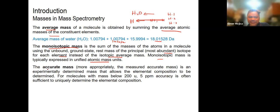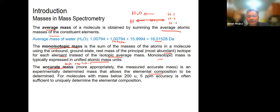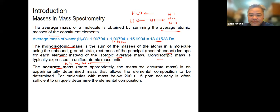There's also what we call accurate mass, which involves high-resolution mass spectrometers. This is an experimentally determined mass that allows the chemical composition to be determined. You use this if you want to determine the exact structure of a compound — maybe it's an unknown metabolite formed when a chemical is released in the environment or reacted with enzymes in our body. For molecules with mass below 5,200, 5 ppm accuracy is often sufficient to uniquely determine the elemental composition.